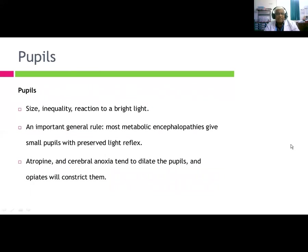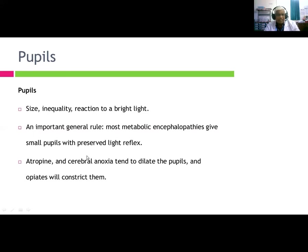Pupils — assess size, inequality, and reaction to bright light. Most metabolic inhibitors produce small pupils with preserved light reflex. Atropine and cerebral anoxia tend to dilate the pupils, while opiates will constrict them.